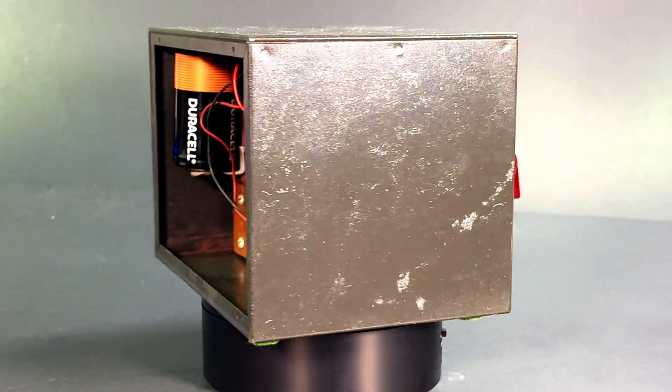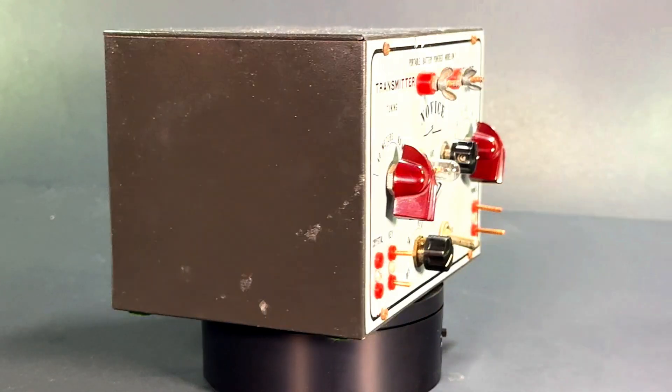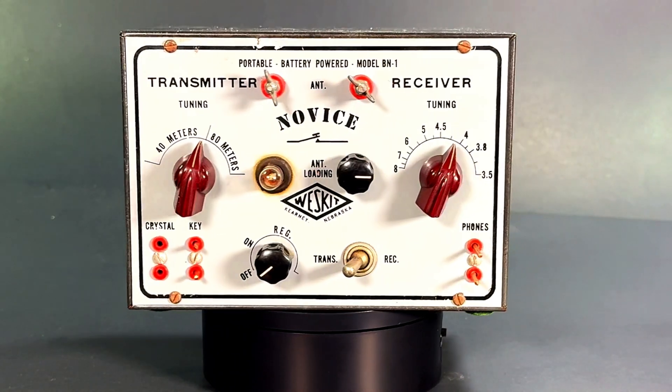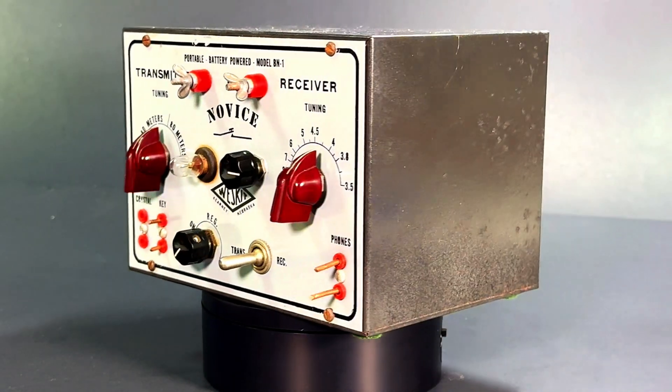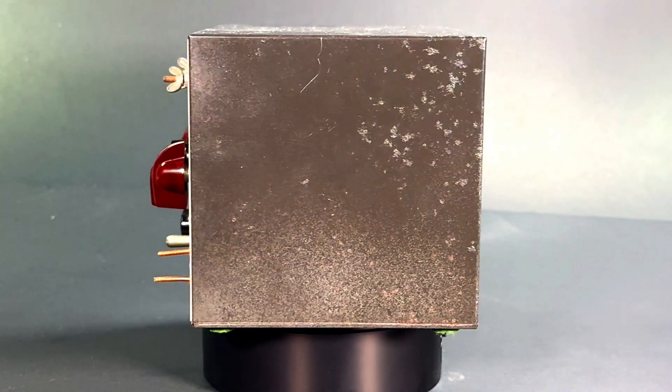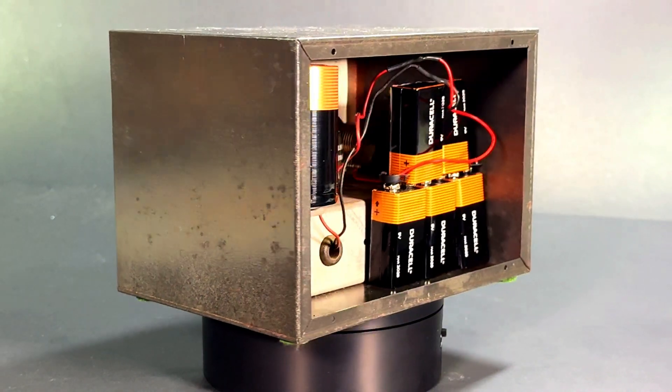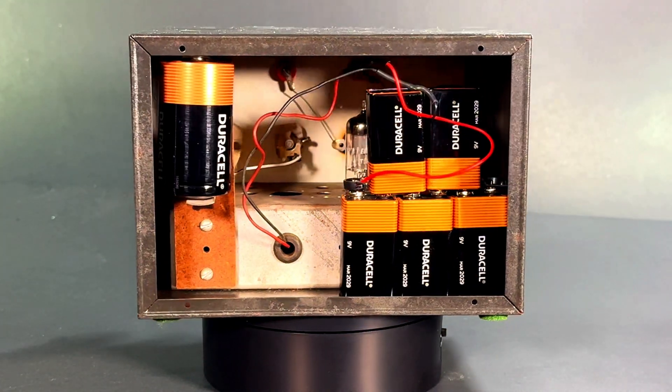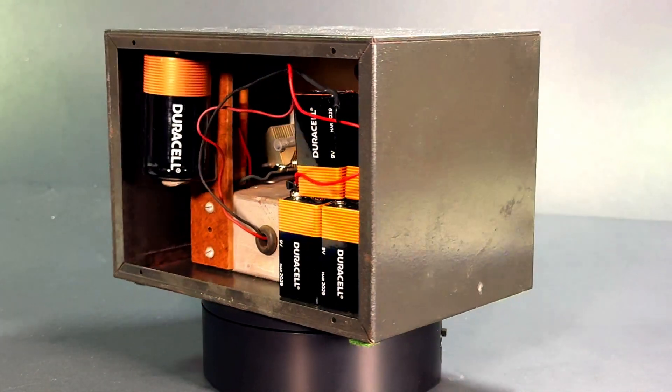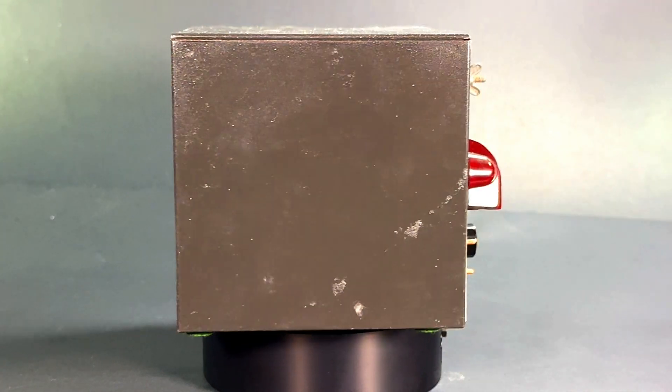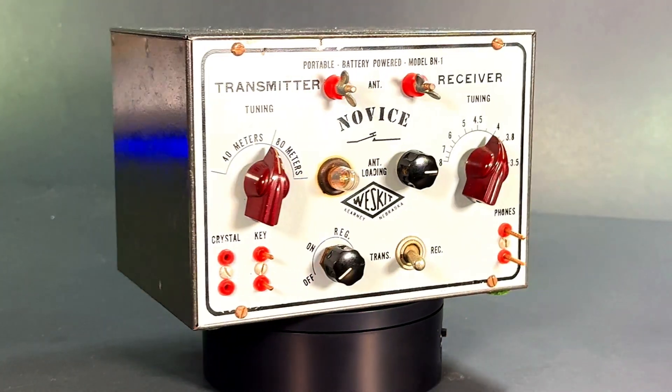So it operates the transmitter and the receiver separately, and that causes some kind of weirdness in how the unit operates in that the transmitter is on and then the receiver is on. They're not on at the same time. You're actually turning them on and off by using the transmit receive switch on the front.